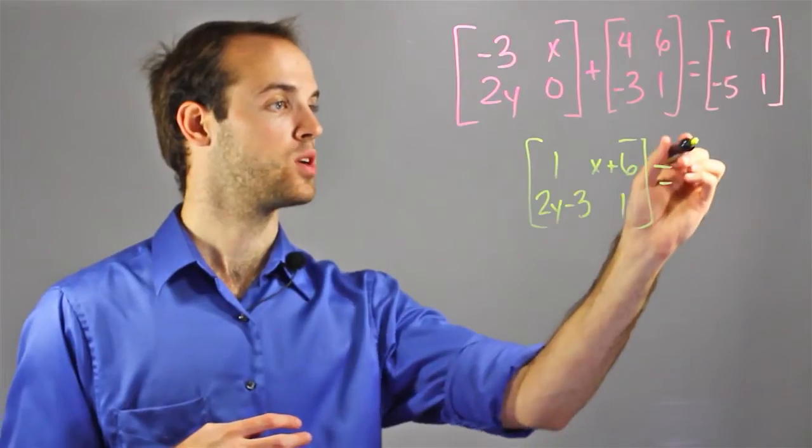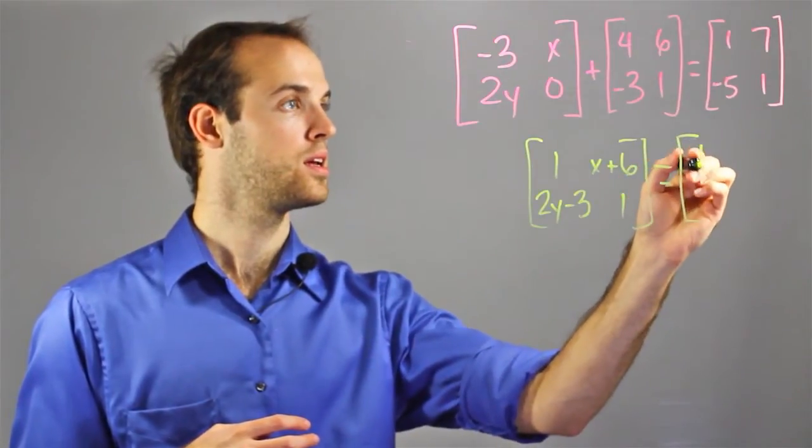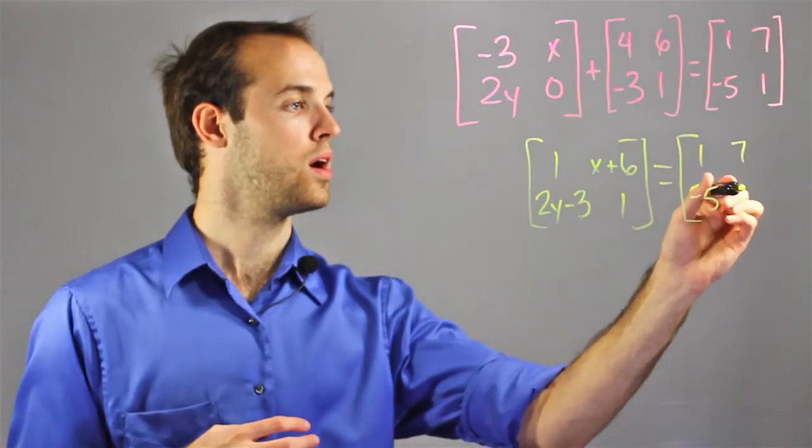And then I leave the right side totally untouched: 1, 7, negative 5, 1.